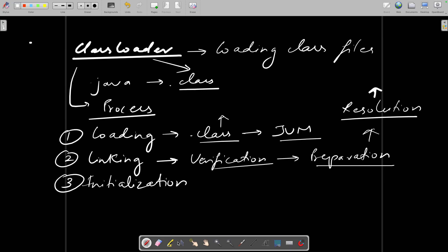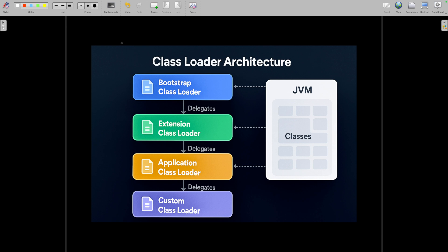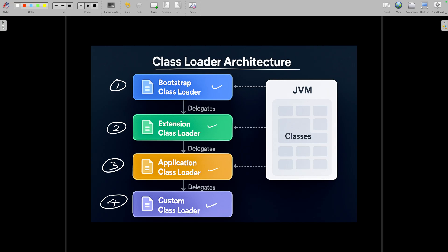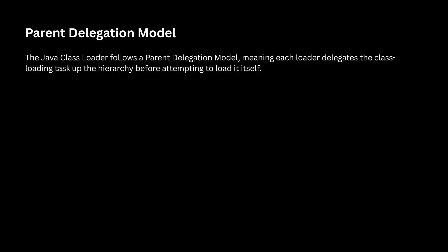Now let's understand the types of class loaders. There are three main types: Bootstrap Class Loader, Extension Class Loader, and Application Class Loader. You can also have your own custom class loader. Hierarchy-wise, Bootstrap is first, Extension second, Application third, and custom fourth. This is also called the parent delegation model, meaning each loader delegates the class-loading task up the hierarchy before attempting to load it itself.